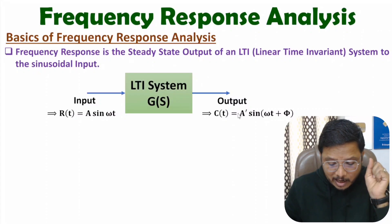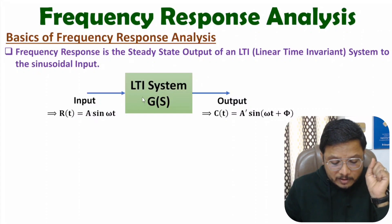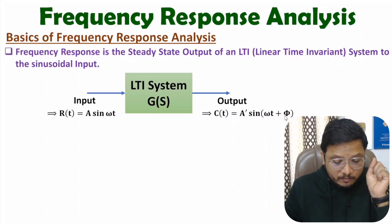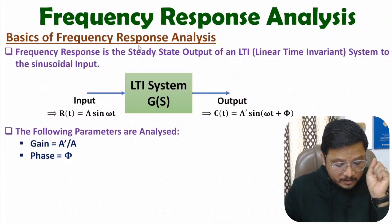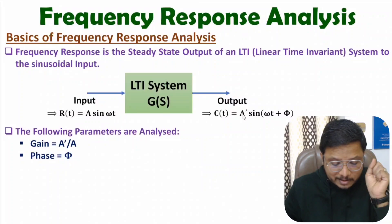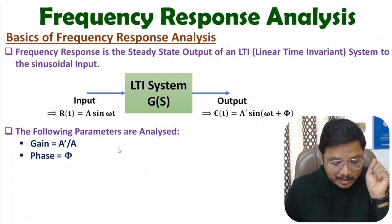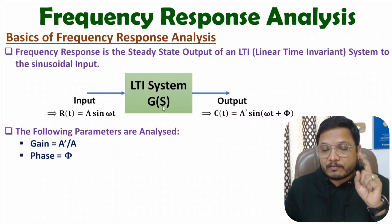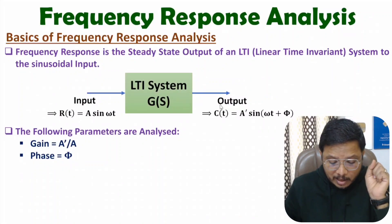Gain will be output amplitude divided by input amplitude, and because of this system there is an additional phase φ. So in frequency response analysis we analyze parameters like gain and phase. Gain will be A' divided by A, and phase is the phase due to this LTI system.